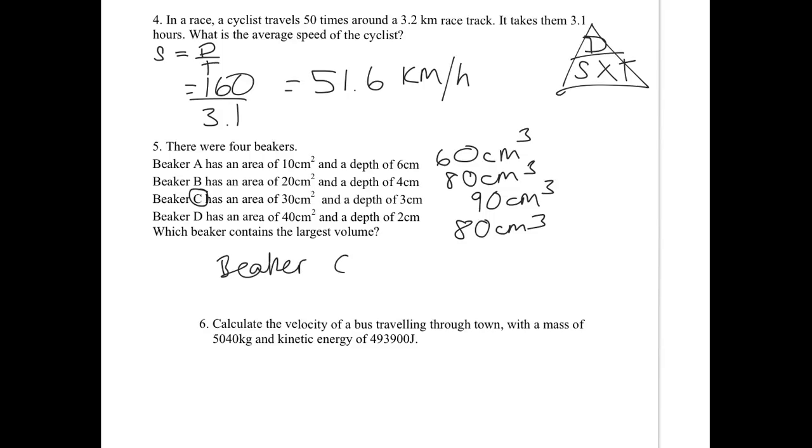Calculate the velocity of a bus travelling through town with a mass of 5040 kilograms and kinetic energy of 493,900 joules. I must be going crazy. I'm very tired. Right, so our equation this time is kinetic energy equals, this is a tricky one, half of mv squared. So this is basic maths now. It's not that basic. I just mean it's maths. So just substitute in the values you've been given. Half times 5040 times v squared.